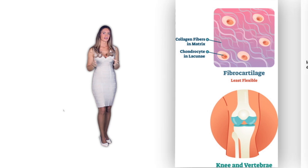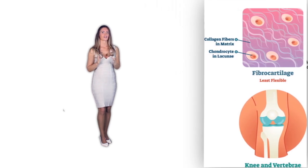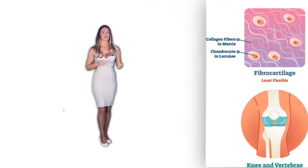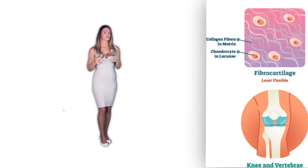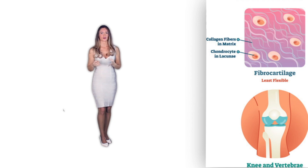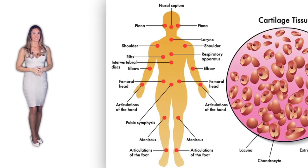And finally, fibrocartilage. This is the last cartilage type. It has fibers of collagen that are very large, opposite to hyaline cartilage. Due to its dense fiber contents, it forms a tissue that is very tough and acts as a shock absorber for many of the structures in the human body.